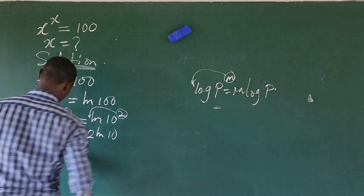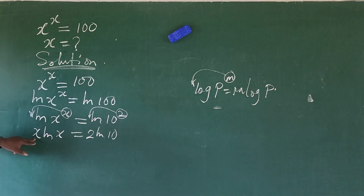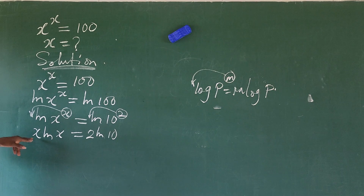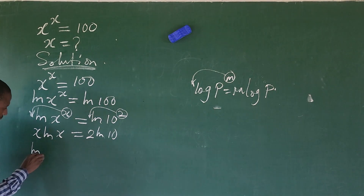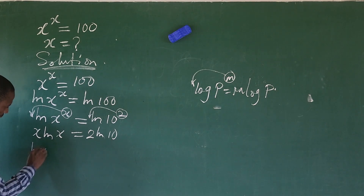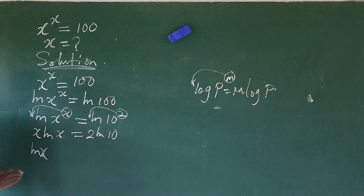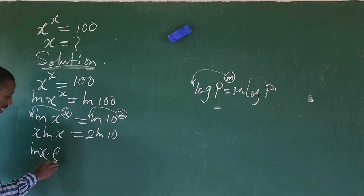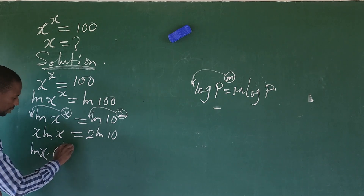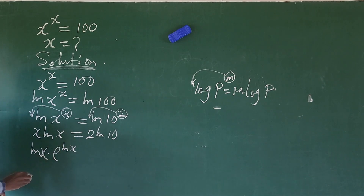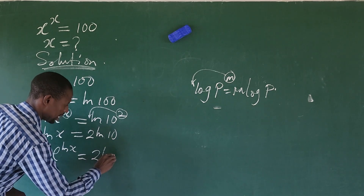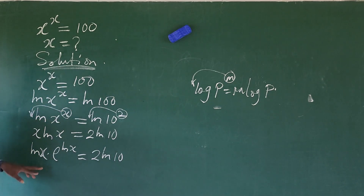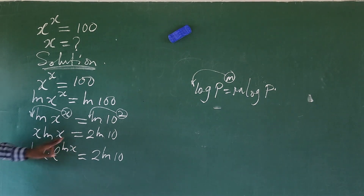Now we want to rewrite the expression on the left hand side. If we rewrite x, this will give us LN of x times x, and we can write that x as e to the power of LN of x. So the left hand side becomes LN of x times e to the power of LN of x, which is equal to 2 LN of 10.